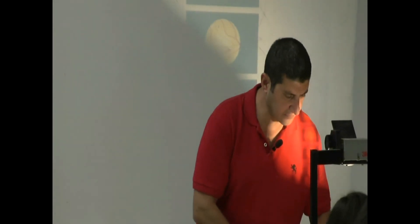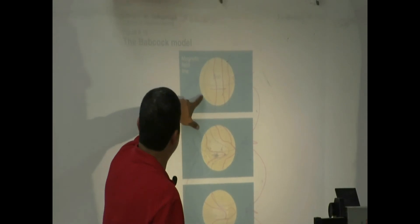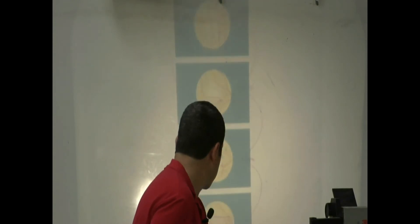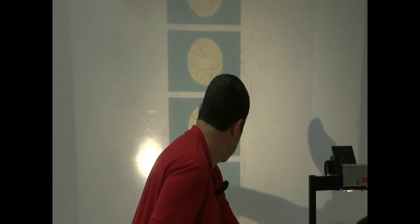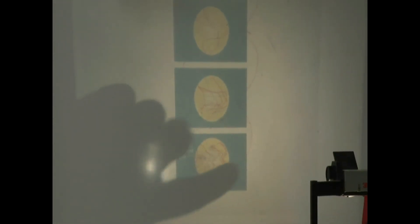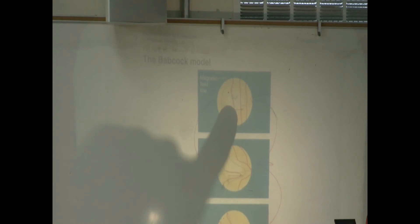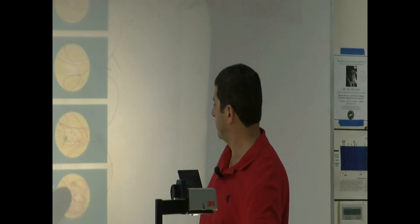This is another way of drawing that — similar. The Babcock model: the magnetic field starts easy, gets wrapped around, gets all twisted up — very, very twisted. A lot of sunspots form. Then the cycle goes back: it gets untwisted. A sunspot minimum begins. Then it gets twisted again, and a sunspot maximum begins.